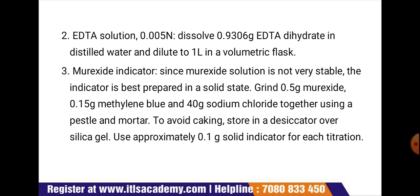To prepare 0.005 normal EDTA solution, dissolve 0.9360 grams of EDTA dihydrate in distilled water and dilute to 1 liter in a volumetric flask. Next is the muroxide indicator. Since muroxide solution is not very stable, the indicator is best prepared in a solid state.